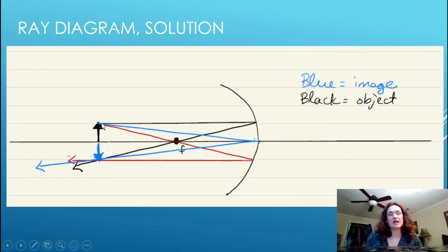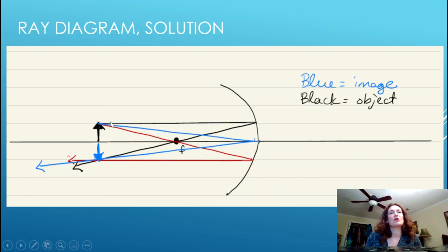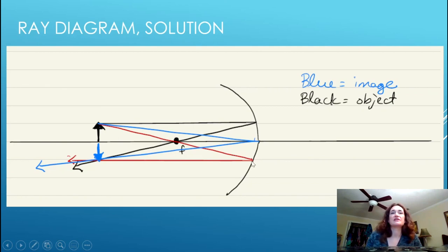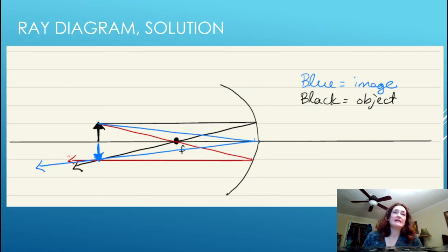The second ray — in blue — goes from the top of the object to the center of the mirror. At the center, it reflects at an equal but opposite angle relative to the optical axis. The third ray — in red — goes through the focal point and reflects back parallel to the optical axis, since rays through the focal point reflect parallel.